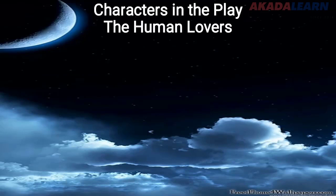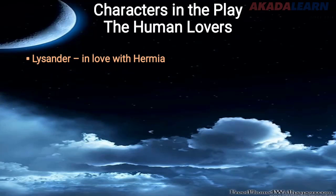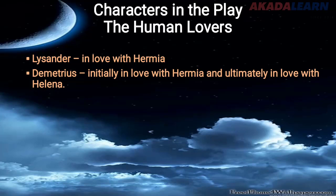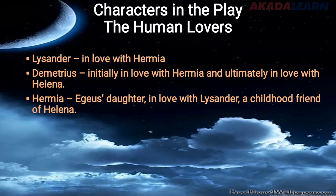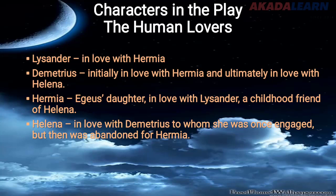The next set of characters are the human lovers. First is Lysander — Lysander is in love with Hermia. Demetrius is initially in love with Hermia and ultimately in love with Helena. Hermia is a girl in love with Lysander, a childhood friend of Helena. And Helena is in love with Demetrius, to whom she was once engaged but was abandoned for Hermia. These are the human lovers in the play.